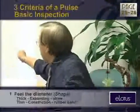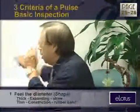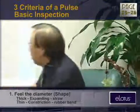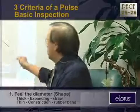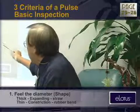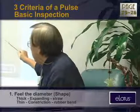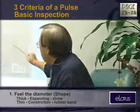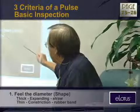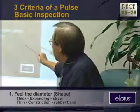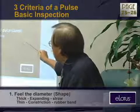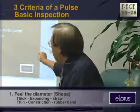The diameter - that's difficult, because we cannot show you an exact model of the artery, so we just have to imagine this time. Thick, expanding, thin constriction. So what's in between? What's normal in between?